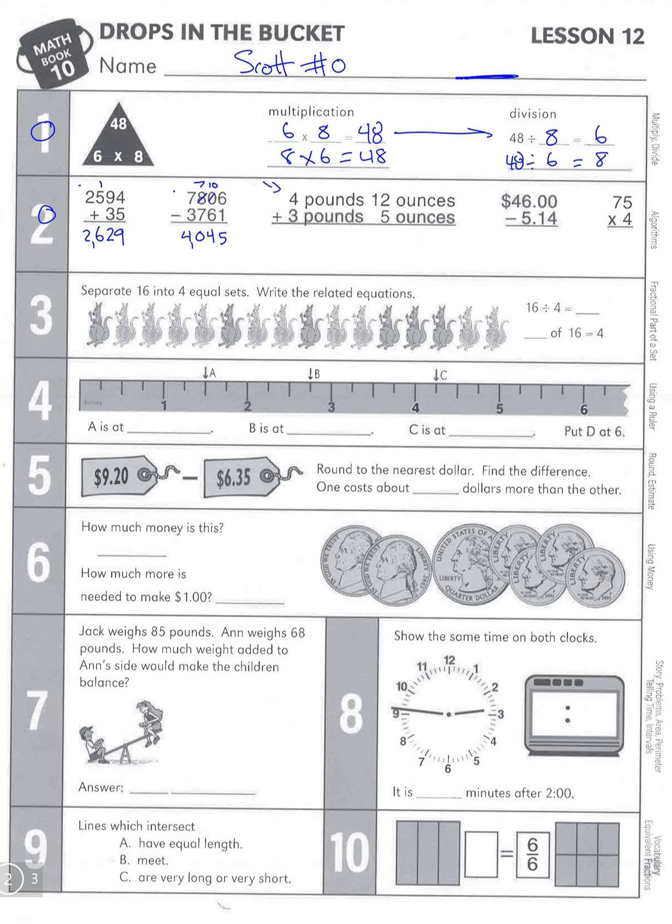Pounds and ounces. Remember that 16 ounces is the same as one pound. If we have 16 or more ounces, we need to regroup those as a pound. Here we go: 12 plus 5 is 17, so hopefully that alarm went off. We need to take 16 of those away, leaving us with 1, and we're going to turn that into a pound.